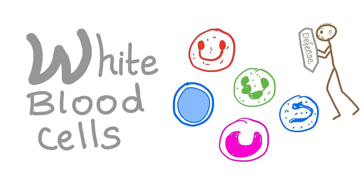It's Medicosis Perfectionalis here. We are done with anemia and we are going to discuss leukemia. In the previous video we talked about the complete blood count. Today let's talk about the white blood cells in an introduction to leukemia and lymphoma.